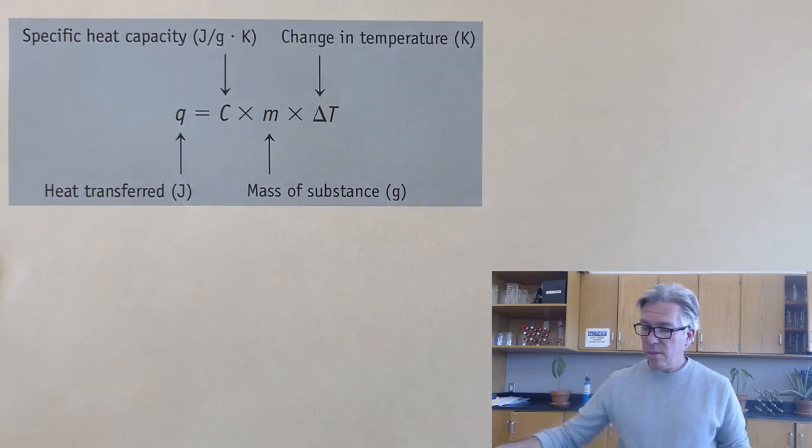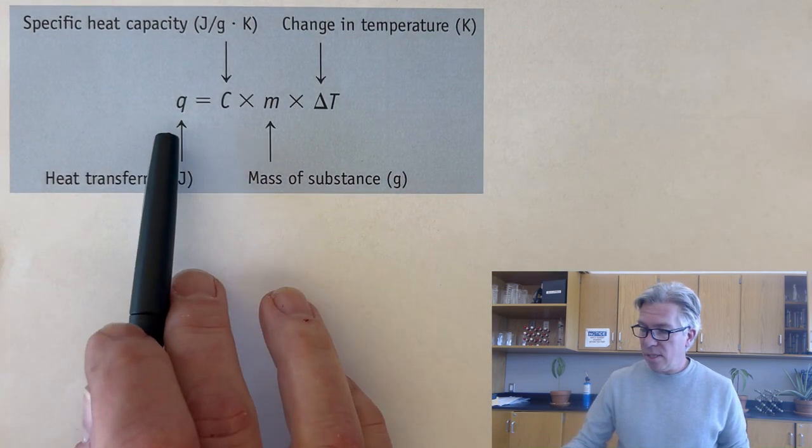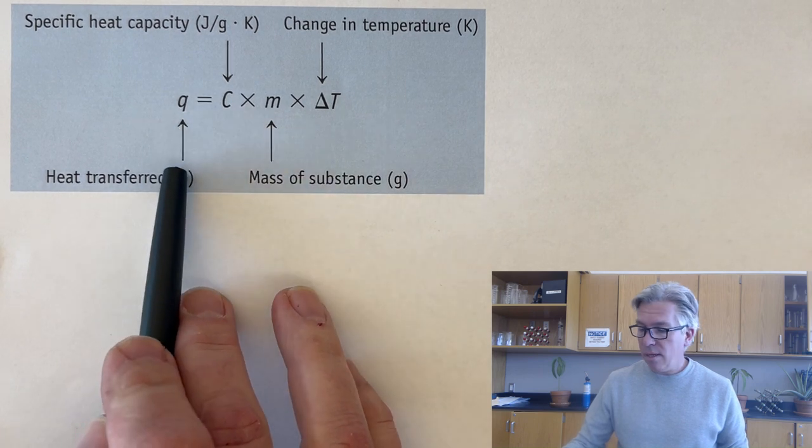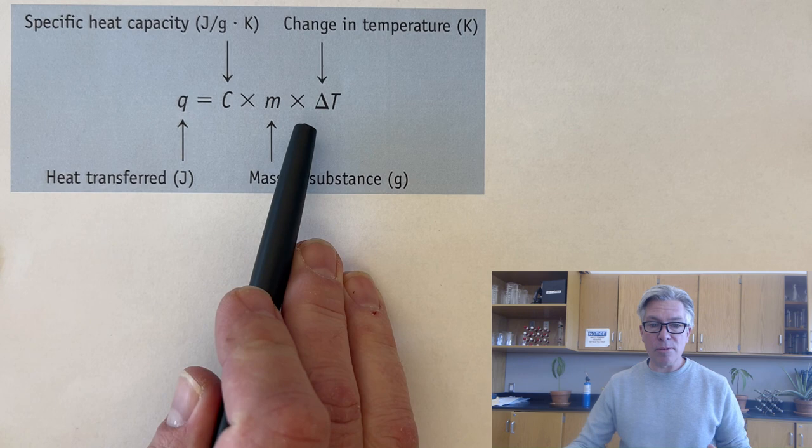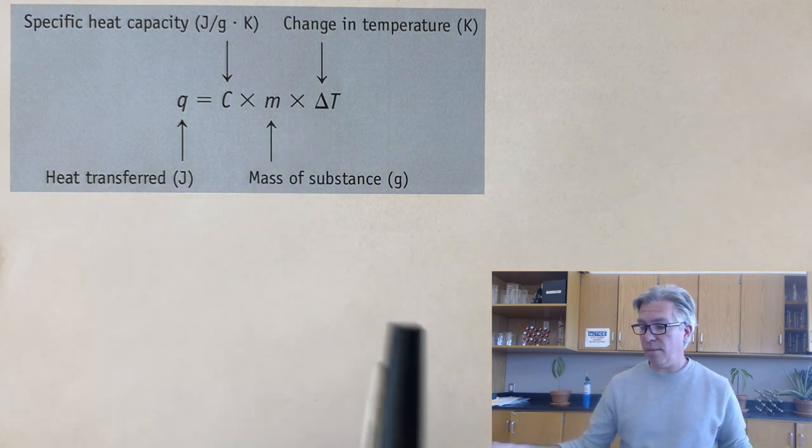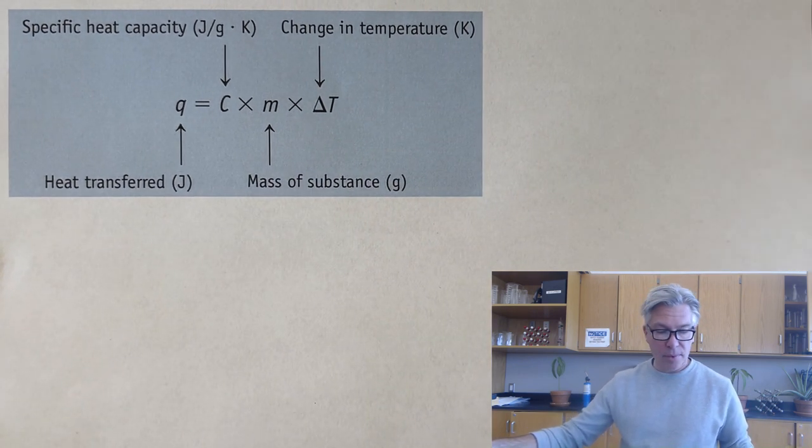We also learned the basic equation: q equals heat capacity times mass times the change in temperature, not the actual temperature, just the change in temperature when something gets heated up or cools down.